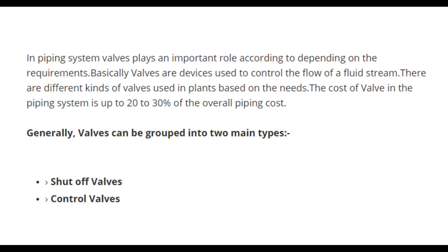In a piping system, valves play an important role depending on the requirements. Basically, valves are devices used to control the flow of a fluid stream. There are different kinds of valves used in plants based on the needs. The cost of valves in the piping system is up to 20-30% of the overall piping cost.